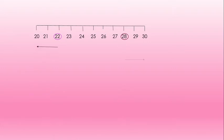Similarly, 28 is nearer to 30 than 20. We round off 28 to the nearest ten as 30. But what about 25? 25 is halfway between 20 and 30. By convention, we round off 25 to the nearest ten as 30.